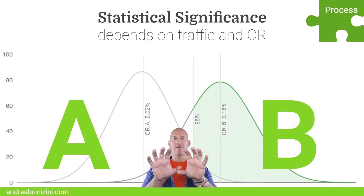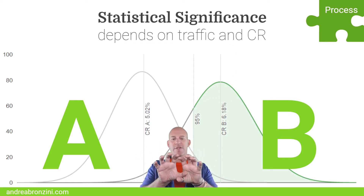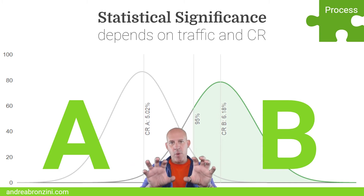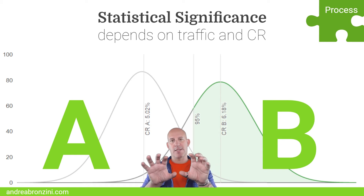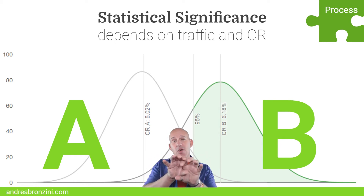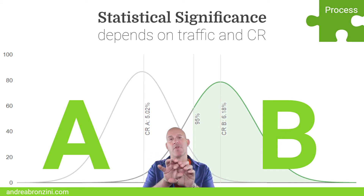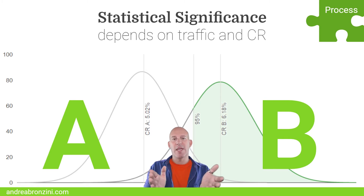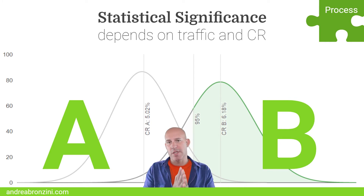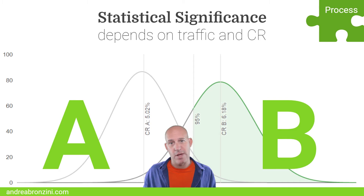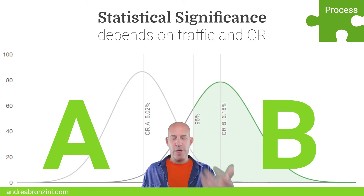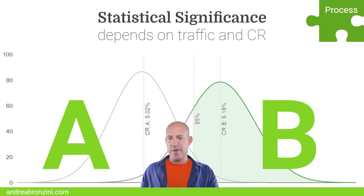These are two different curves, and the more these curves are apart, the more statistically significant you are. This experiment is statistically significant. If they're very close together, you cannot tell the difference between one and another — then A is not better than B and B is not better than A. So your results are inconclusive, and this test didn't give you any information. So the question is: how do you make sure that your experiment is statistically significant?